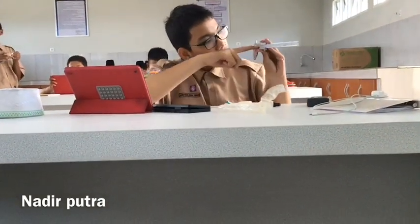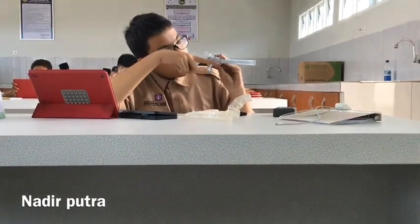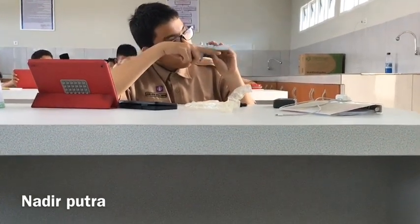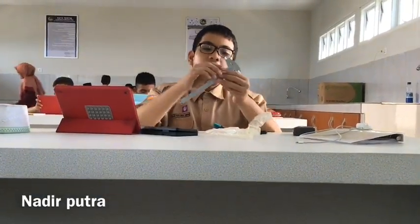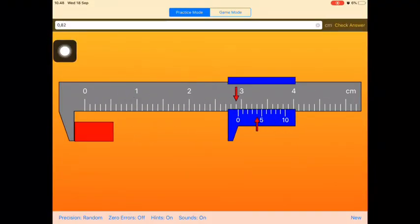This is the main scale of a vernier caliper and it's marked with centimeters. The second is marked with a vernier scale and the last is the retainer to stop the jaws.